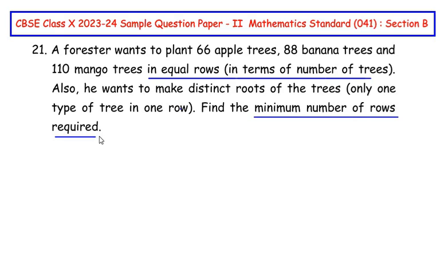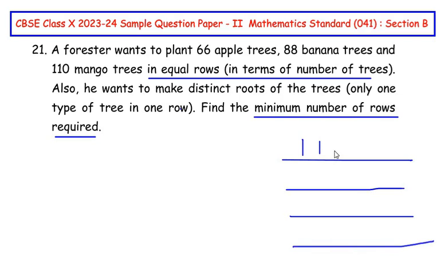So let us try to understand the question first. There is a forester who wants to plant all these trees and he wants to place the trees in such a way that there are minimum number of rows. Minimum number of rows means he has to plant maximum number of trees in each row. So we have to find out first how many maximum number of trees can accommodate in a row.